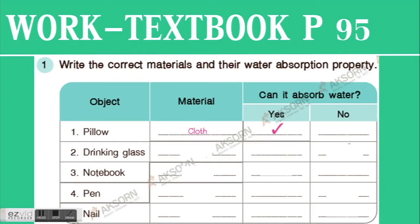What about a drinking glass? What material is used to make a drinking glass? Yes, it's glass. Does it absorb water or not? Correct — it does not absorb water. What about a notebook? It's made of paper. Can paper absorb water? Yes, it can. We did an experiment where we put water on paper and saw how it became weak. Paper absorbs water.